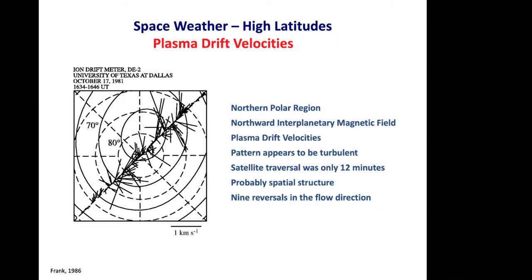The third high-latitude space weather example shows plasma drift velocities in the high-latitude F-region in a magnetic-latitude magnetic-local-time reference frame, obtained with the ion drift meter on the Dynamics Explorer II satellite. The convection pattern appears turbulent. The traversal of the polar region took only 12 minutes, so the highly structured drift velocities probably represent spatial structure in the convection pattern rather than time variations. A careful examination indicates nine reversals of flow direction — corresponding to extreme space weather.